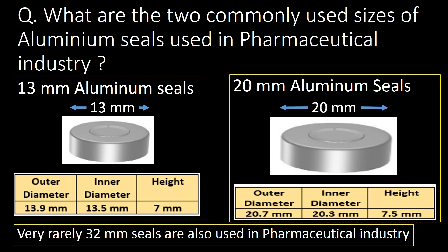Welcome. We will start with a very basic and important question: what are the two commonly used sizes of aluminum seals used in the pharmaceutical industry? 13mm aluminum seals and 20mm aluminum seals are the most commonly used sizes. You can refer to the table below for other important dimensions like outer diameter, inner diameter, and height.